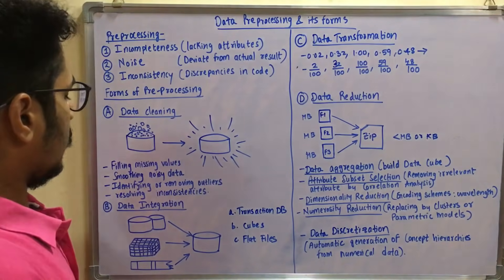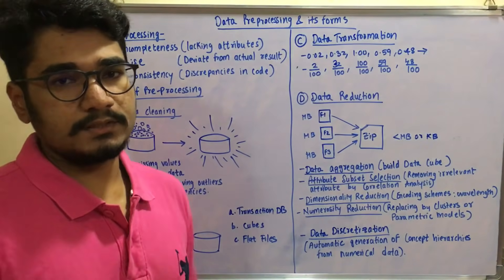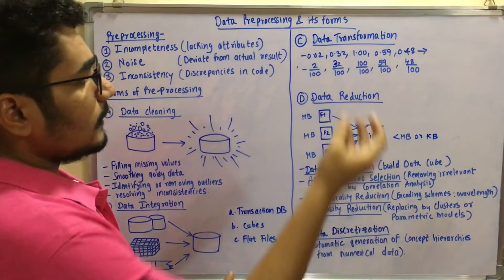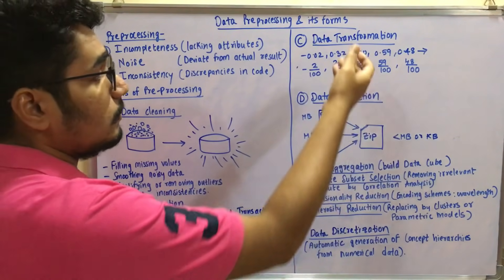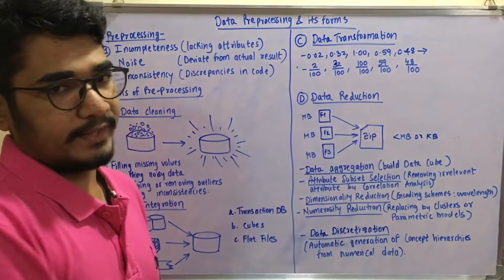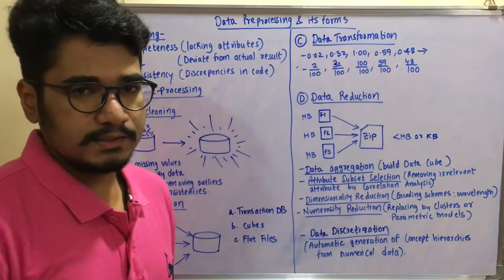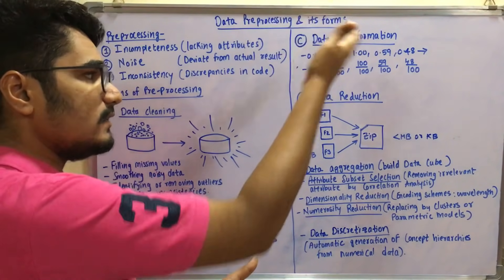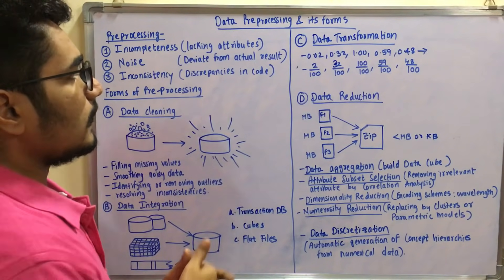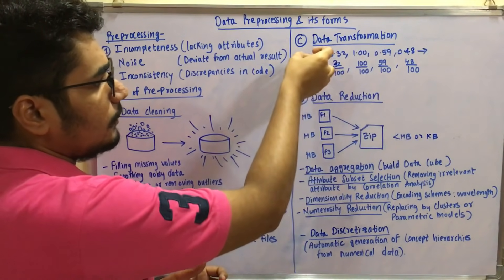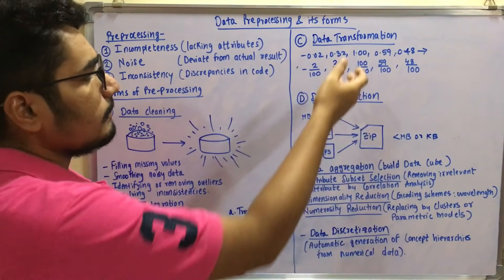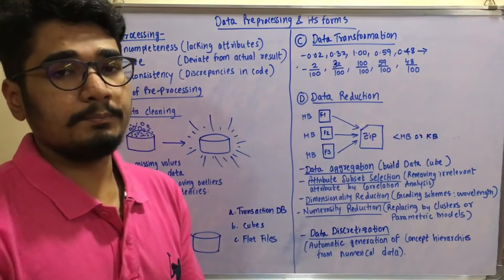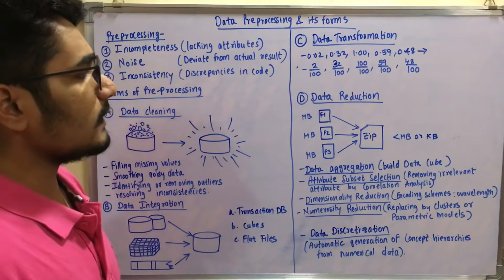Next is data transformation, which means transforming data into similar or easy-to-represent formats. For example, if you have values like -0.02, 0.32, 1.00, 0.59, and 0.48, these can be difficult to work with directly. Just as in mathematics we convert numbers into appropriate formats before solving, in preprocessing you multiply or divide by 100 to represent values in a more usable numerator-denominator format, so you can easily input them and obtain proper results.